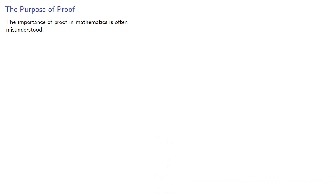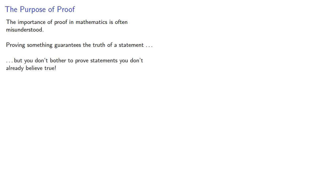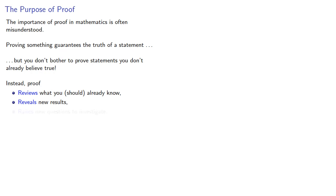The importance of proof in mathematics is often misunderstood. Proving something guarantees the truth of a statement, but you don't bother to prove statements you don't already believe true. Instead, proof does three things: first, it reviews what you should already know; it reveals new results; and it raises new questions to investigate.